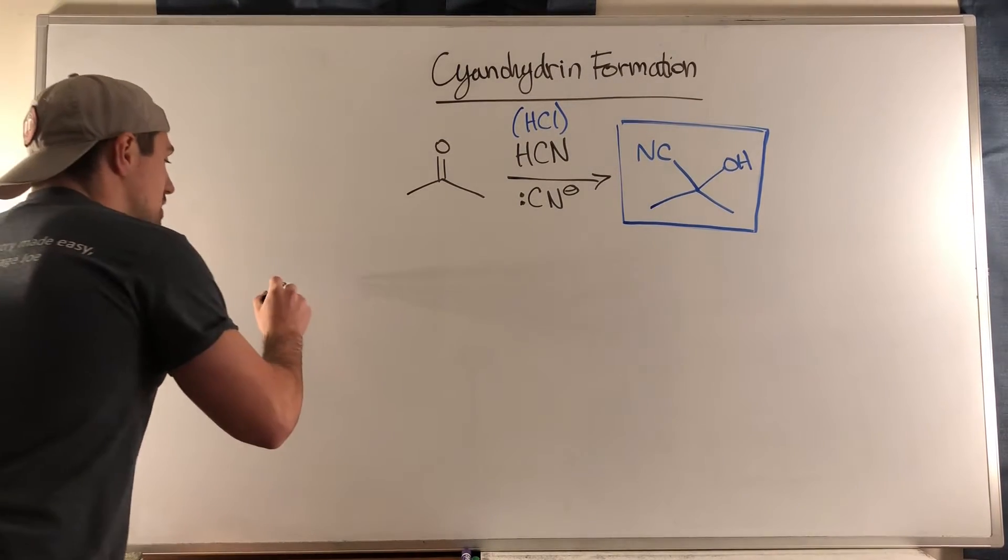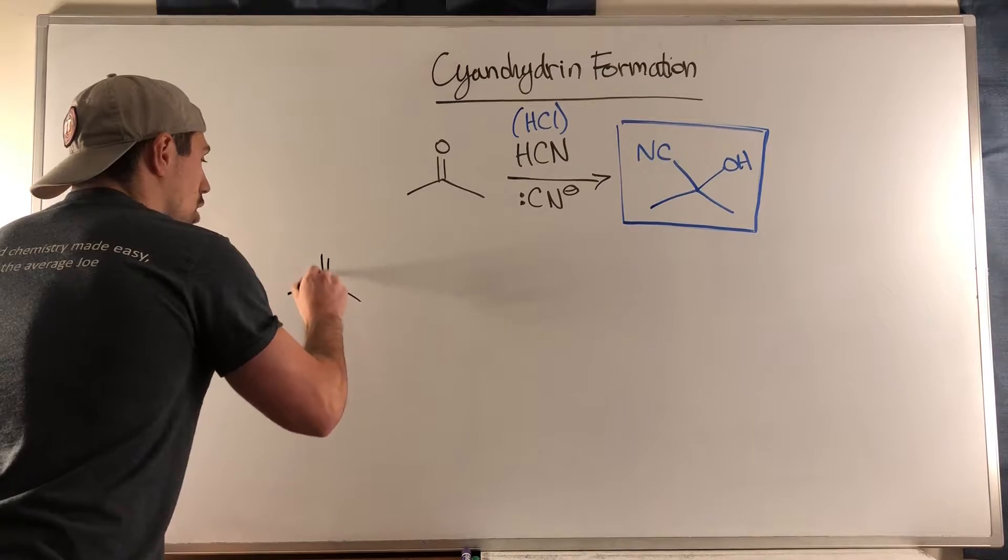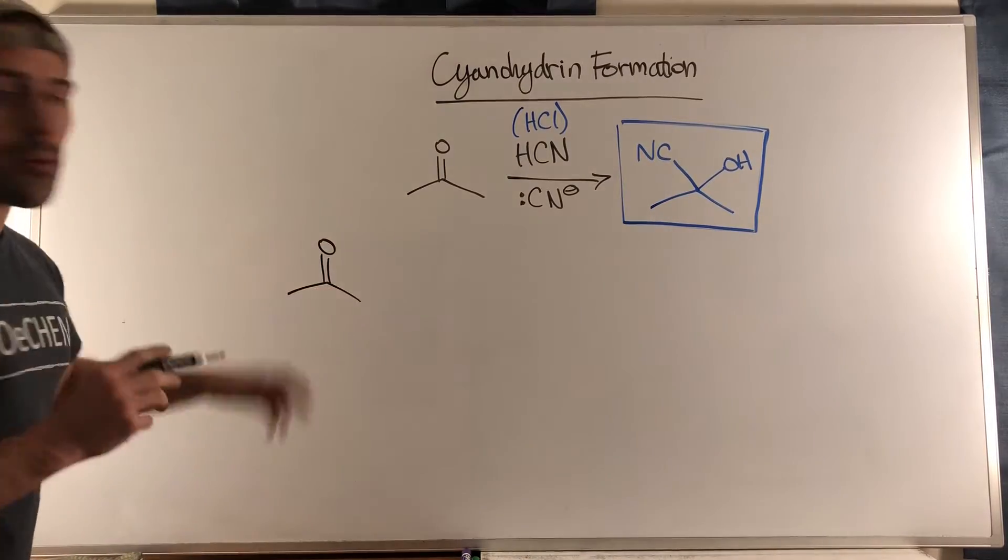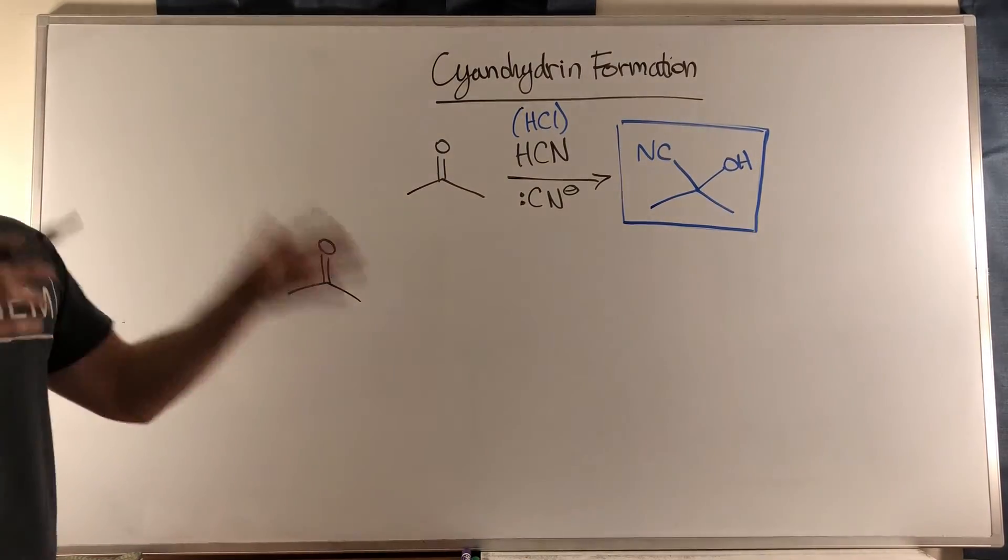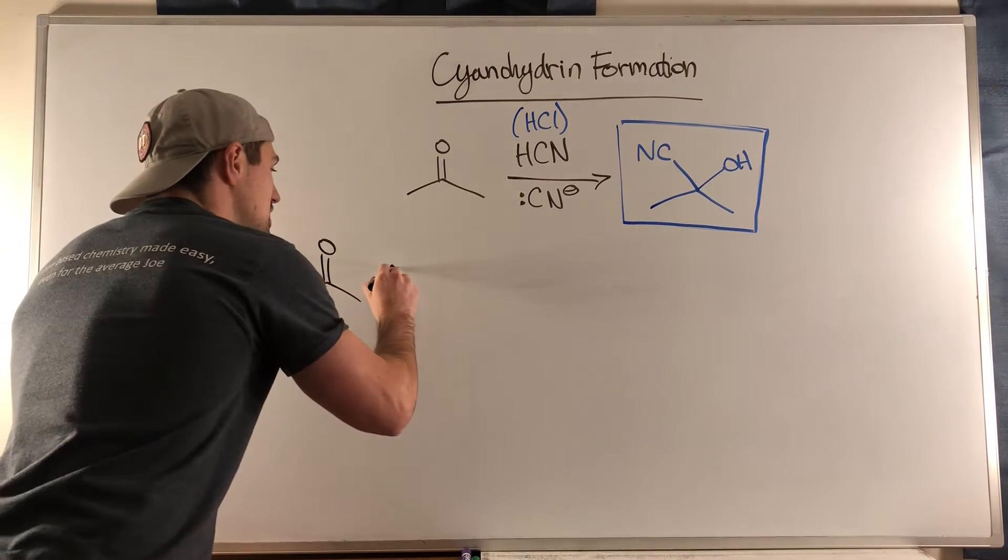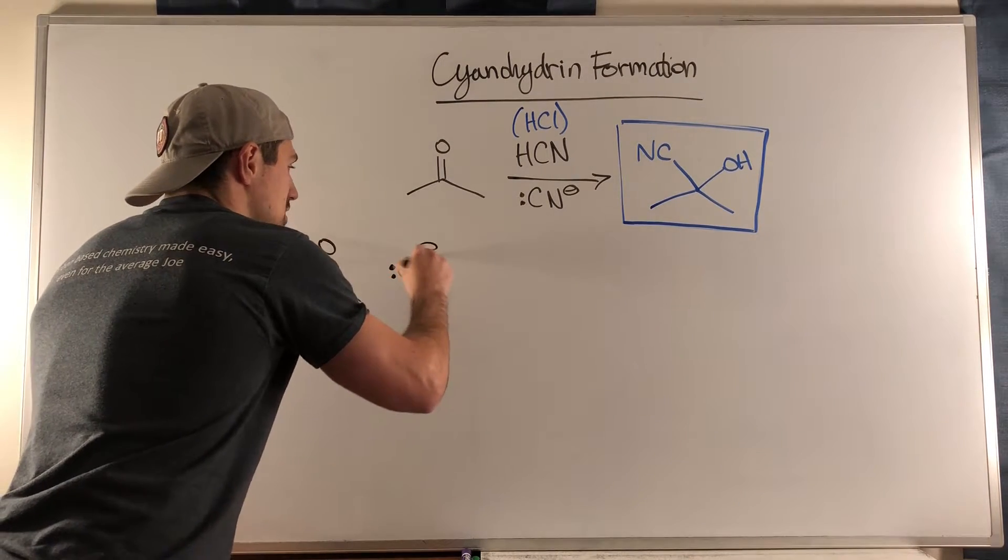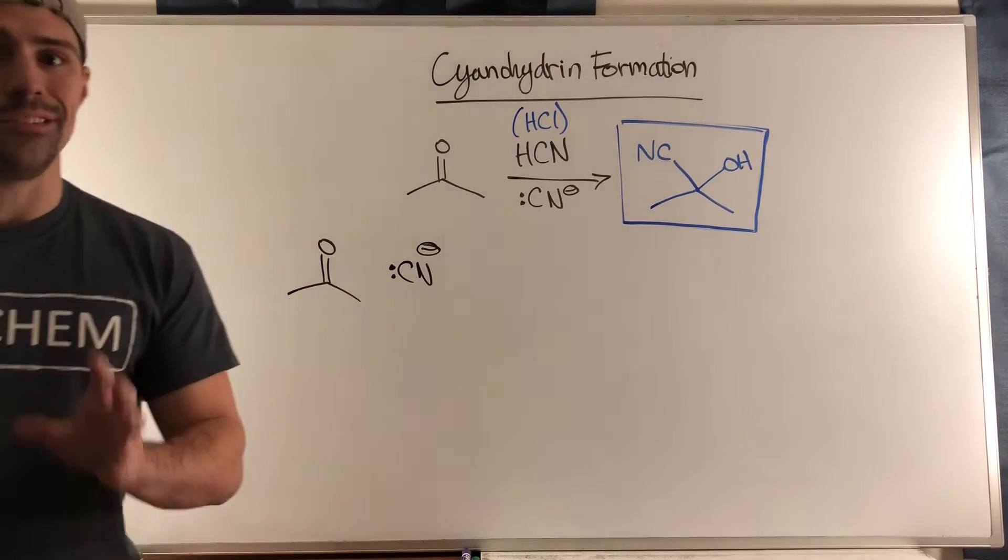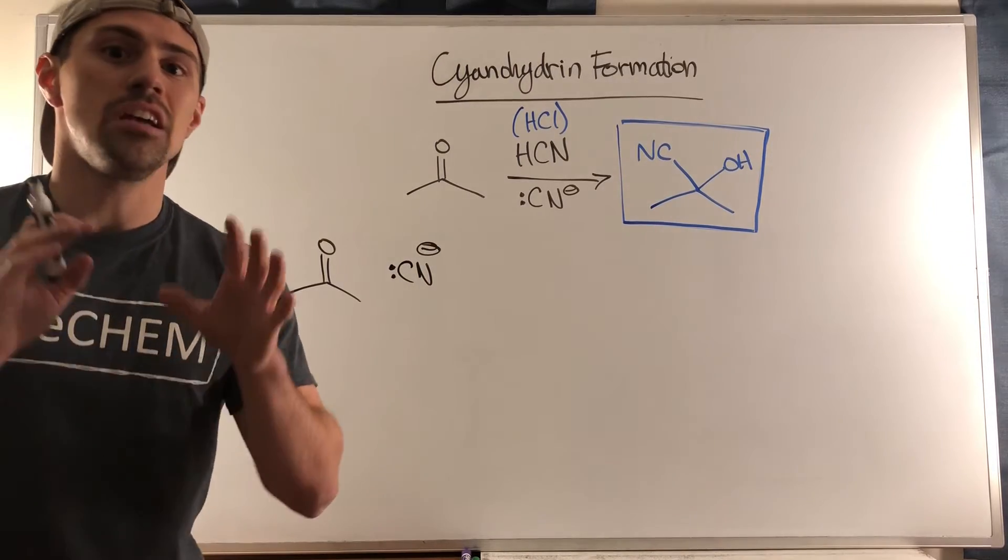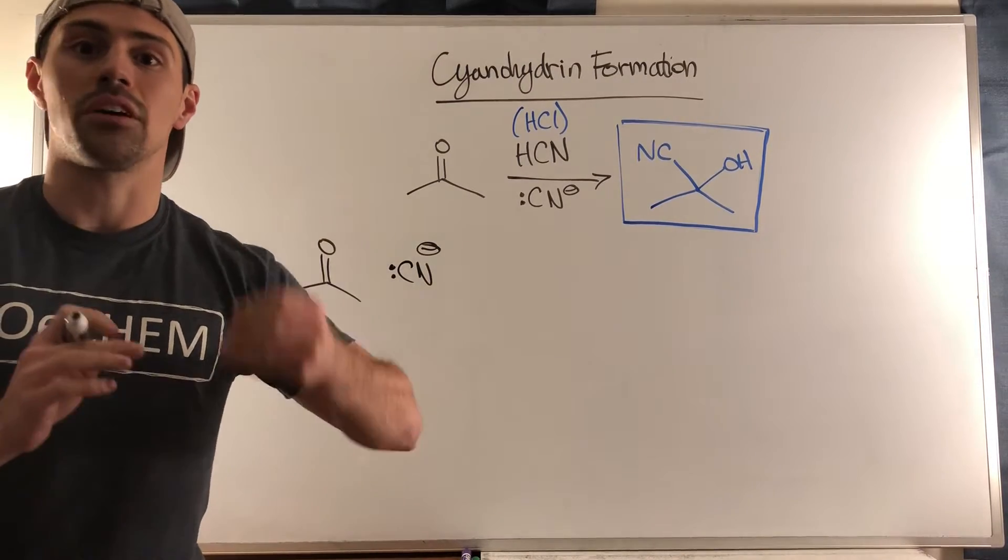Instead of our usual protonate the carbonyl carbon first to activate this carbon and make it more reactive, the difference here is that we have cyanide, CN minus. CN minus is an excellent nucleophile, and that's why this mechanism doesn't start with protonating the carbonyl oxygen.